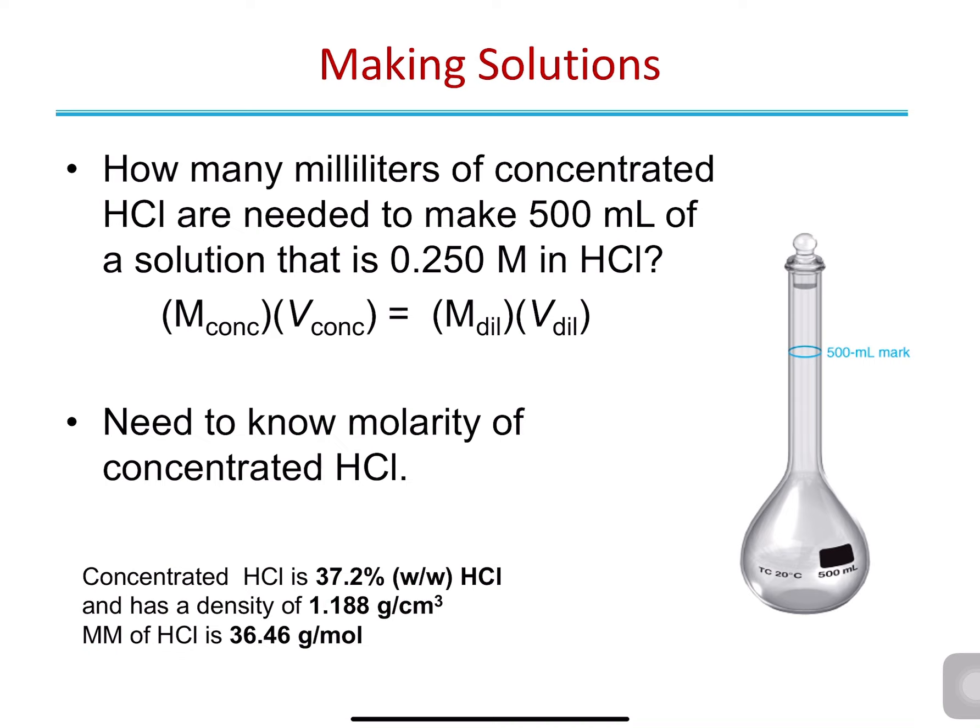Another important type of calculation you will encounter during your practical work is how to calculate the volume of a concentrated hydrogen chloride solution needed — specifically, how many mL of concentrated HCl are required to make a certain diluted solution with a specific molarity. For example: how many milliliters of concentrated HCl are needed to make 500 mL of a 0.25 molar HCl solution? We apply the same equation: M_concentrated times V_concentrated equals M_diluted times V_diluted.